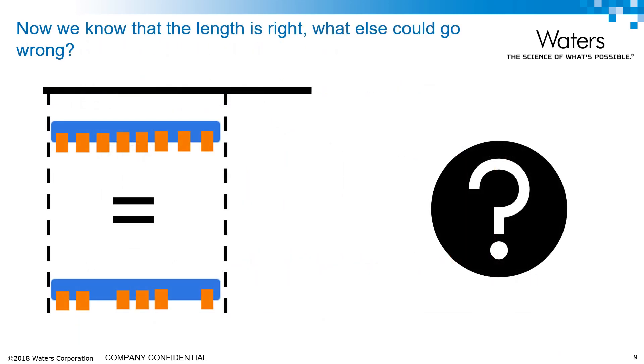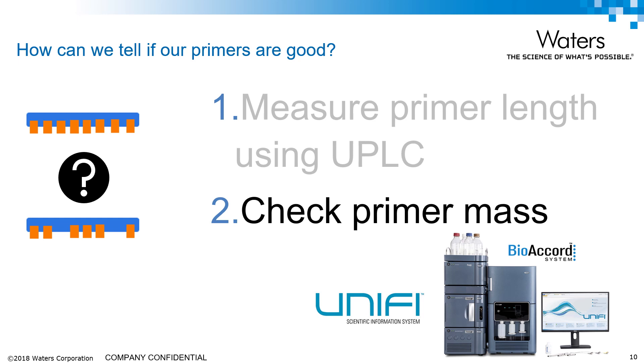Okay, so after UPLC separation we know that the length is right, but what else can go wrong in the manufacture of the primers? Well, if the primers have been chemically modified or simply the wrong bases have been added, then we would see a change in molecular weight. And we would measure the molecular weight using mass spectrometry, using a compliant-ready simplified mass spectrometer in what we would call the BioAccord system, which is a very small mass spectrometer about the size of an LC system.